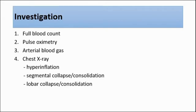Other signs of hyperinflation on chest X-ray are horizontal ribs, flattened diaphragm, and increased hilar bronchial markings. Also for bronchiolitis on the chest X-ray, we might be able to see segmental or lobar collapse or consolidation.